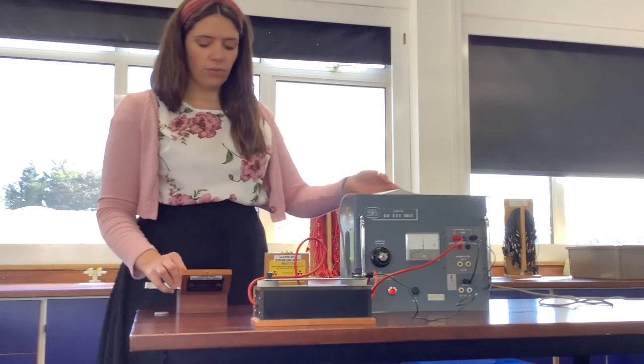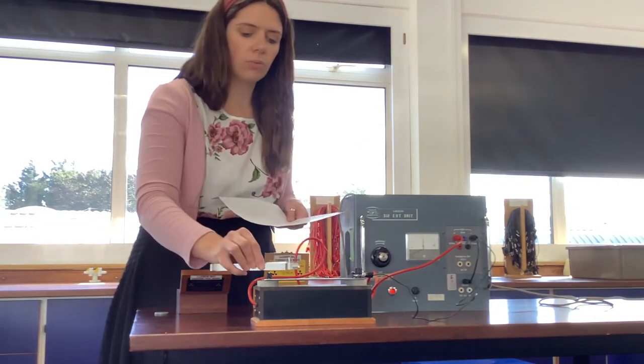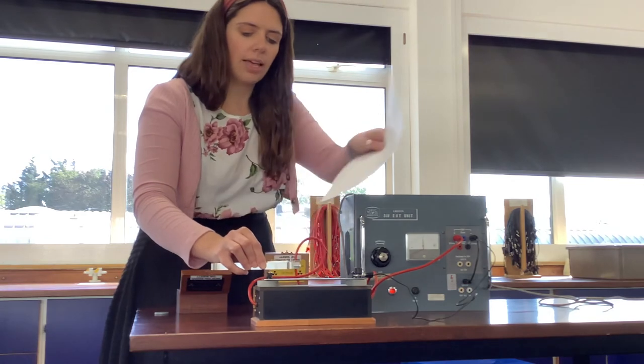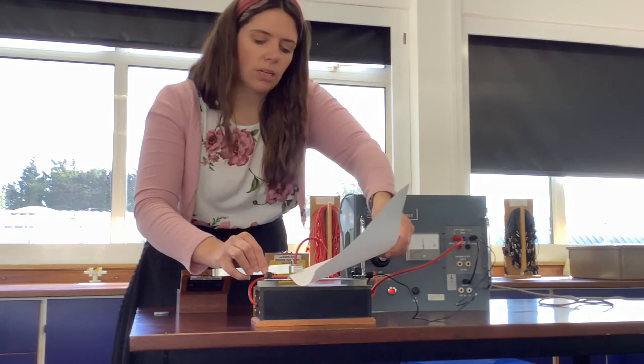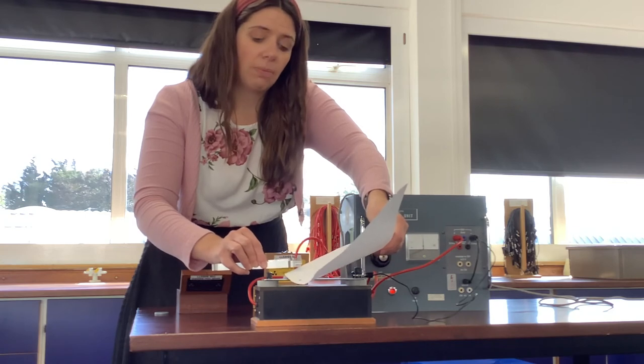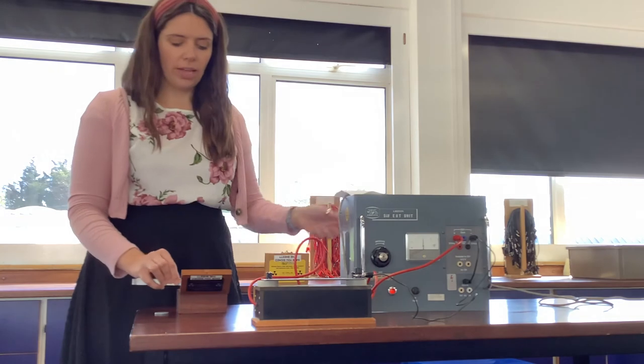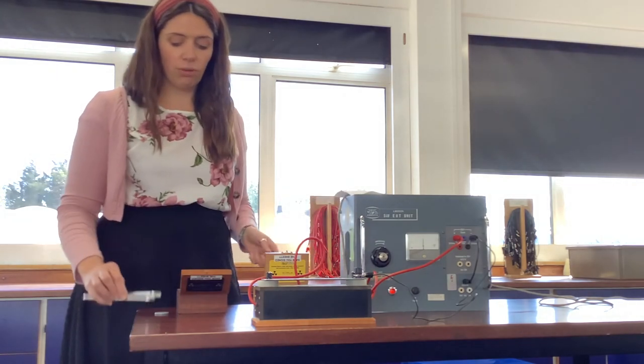Now this is also our way to prove that alpha is stopped by paper. So I'm going to hold it in a place where it would work, and then put some paper between it, and it stops. Because the alpha is not getting through the paper, the gamma might be, but the alpha isn't. So this helps prove that alpha is stopped by paper and has a really short range.